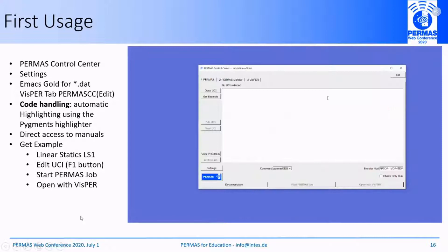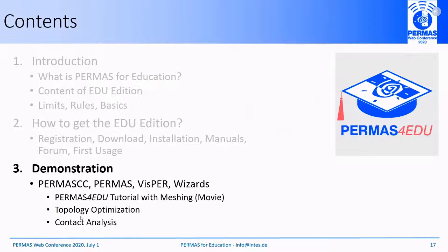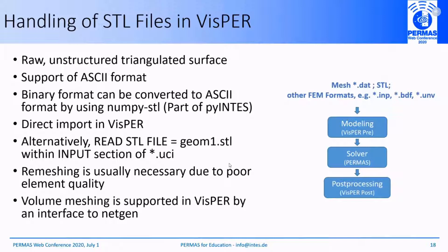The last part is a demonstration of different topics: the PERMAS Control Center, launching PERMAS and VISPA, and the wizard concept in VISPA. The standard CAE process assumes a mesh given in PERMAS format, or geometric information in STL format or other supported FEM formats like an ABAQUS input file, NASTRAN, bulk data file, or UNV universal file. Here we will focus on importing geometry — an STL file provided with the Education Edition — to introduce the usual pre-processing workflow.